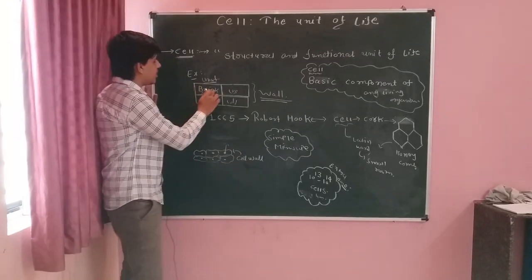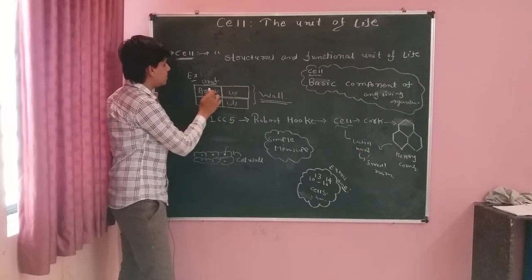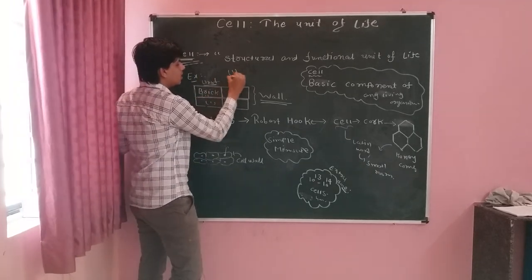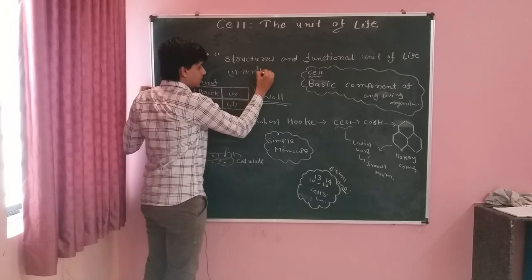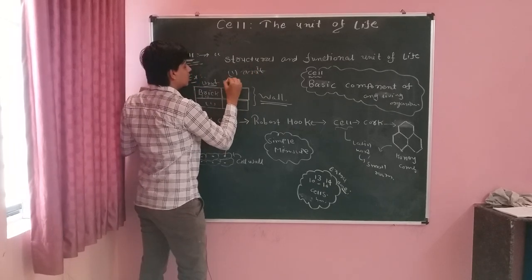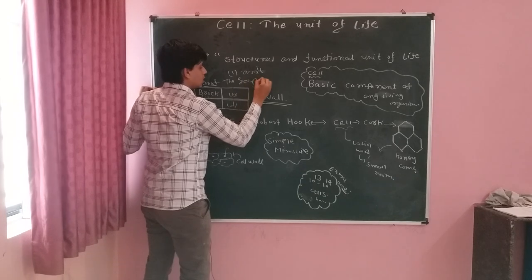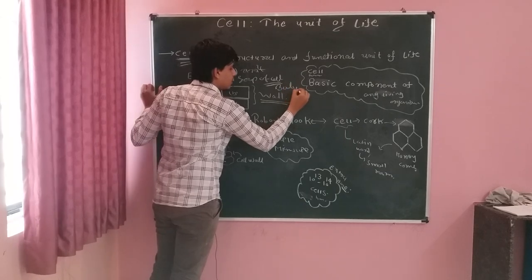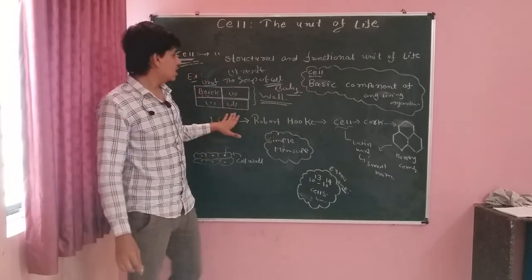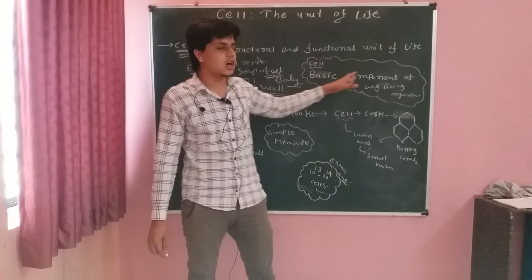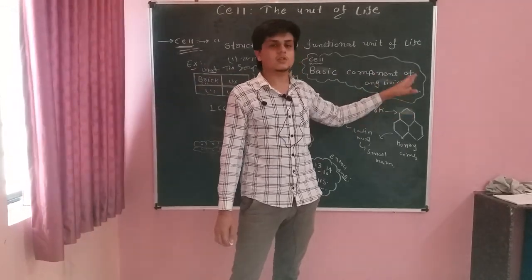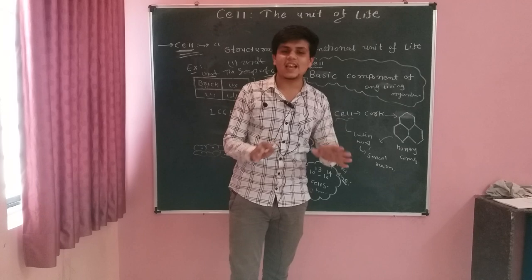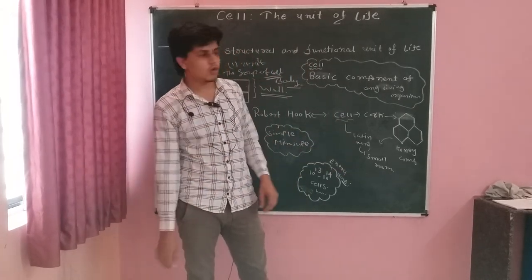Ab dekhtay, abhi ye brick hai. Jaise ye wall banti hai. Ab brick ke jagah par hum le lete hai the cell. Ab a single cell will be the unit. Now the group of cells will form the body of living organisms. Ab we can say that the cell is the basic component of all living organisms. Once again, the cell is the basic component of any living organisms. Agar cell nahi hoga toh kabhi bhi human body form nahi hoga.